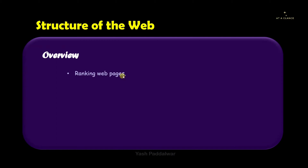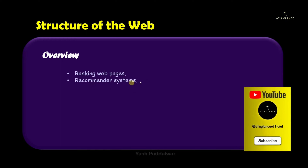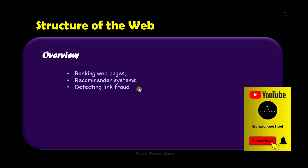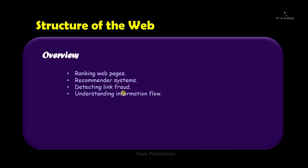The structure of the web is used to rank web pages. We have already seen the page rank algorithm — if you haven't, do watch it from the big data analytics playlist. The structure of the web is also used in recommendation systems, and it is also used for detecting link frauds. Nowadays there are a lot of fraudulent activities occurring inside the web, so to detect link fraud we can use the structure of the web.